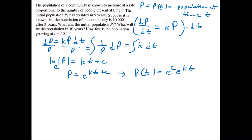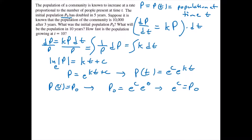We can note that the initial population is p0, so p of zero equals p0. That means p0 will equal e to the c times e to the zero, and e to the zero is one, telling us that e to the c equals p0. So we can rewrite our function as p of t equal to p0 times e to the kt.